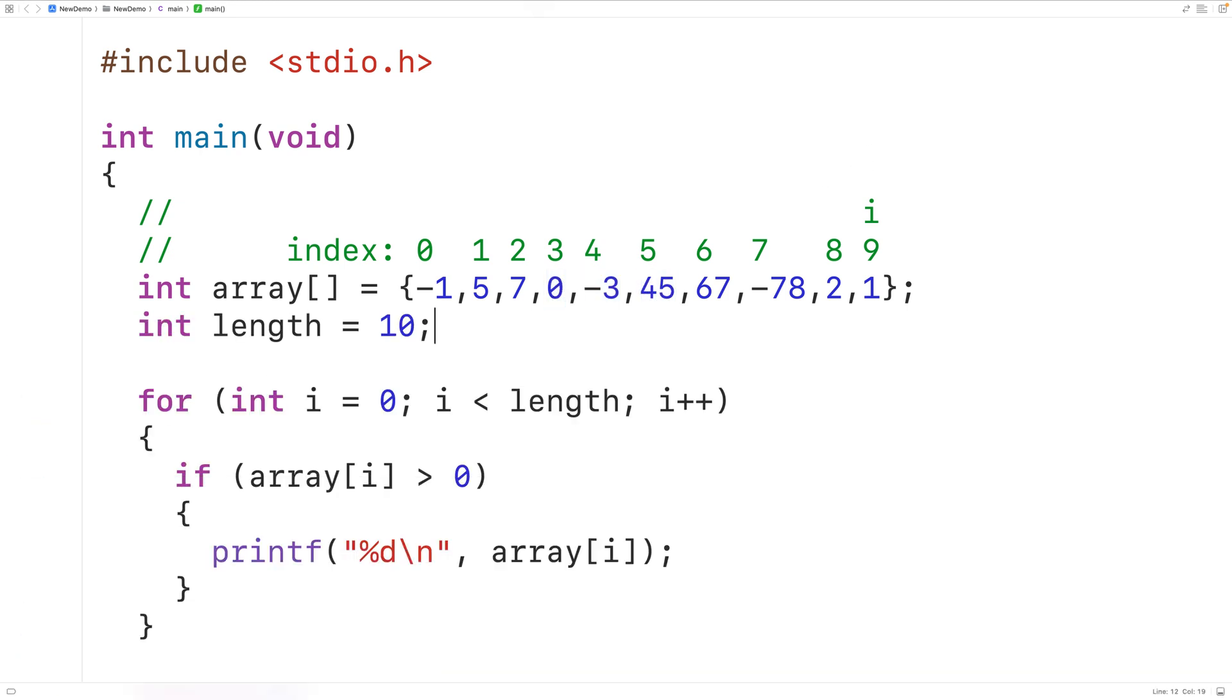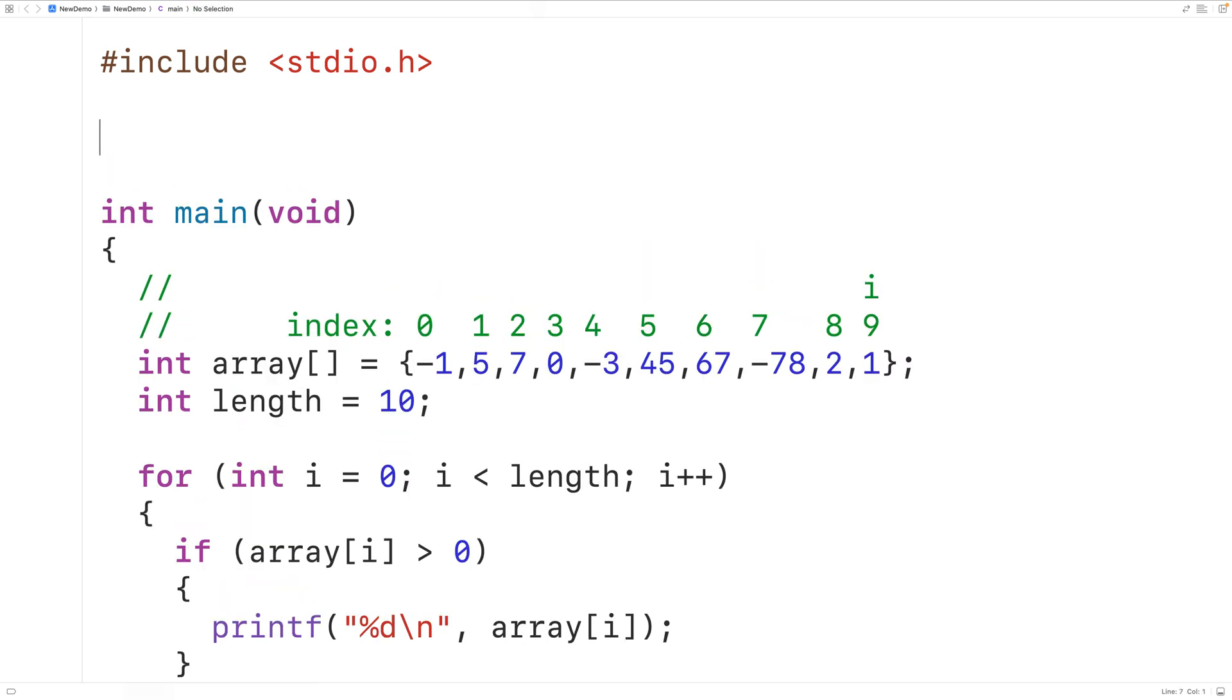Now one more thing we could do is put this logic inside a function so we could call the function in different places in our program. We'll declare the function up here. The function is going to have a void return type because the function is not going to return any values it's just going to print out values. Then we'll call the function print positive.